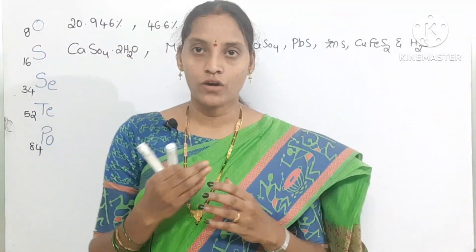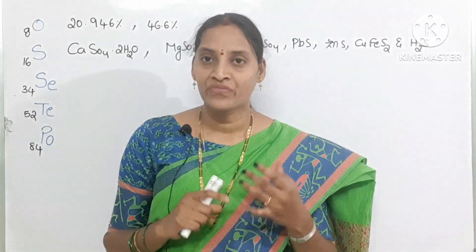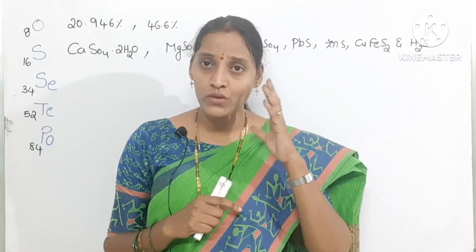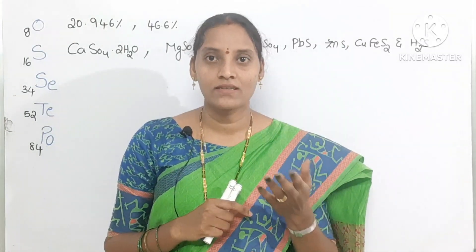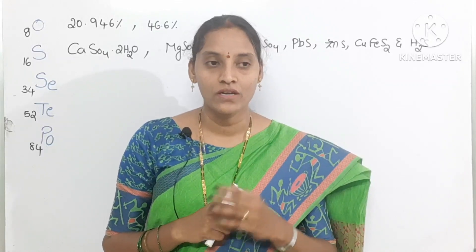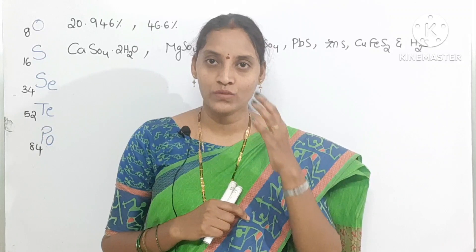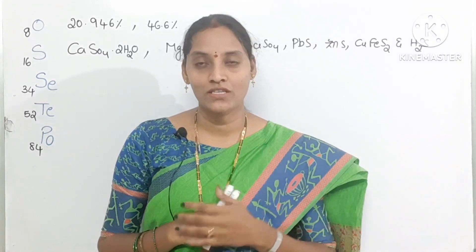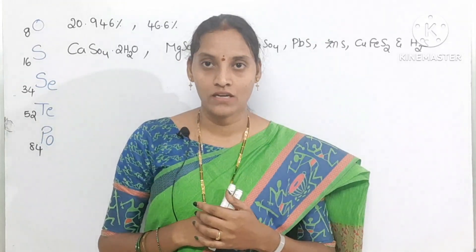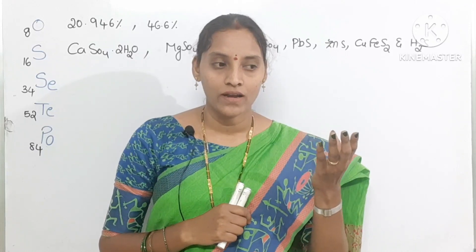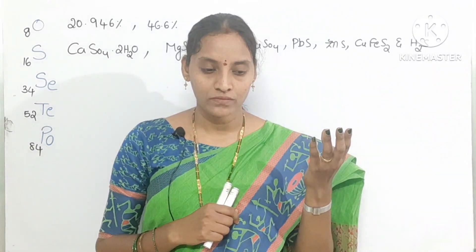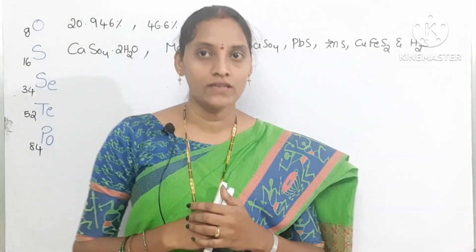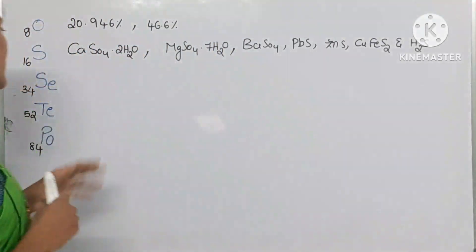Sulfur is also found in things around us — hair contains keratin which has sulfur, onions and garlic also contain sulfur. When cutting onions, we get tears because of the breaking of sulfur bonds present in the onion. Mustard seeds, proteins, and eggs are all sulfur-containing materials.